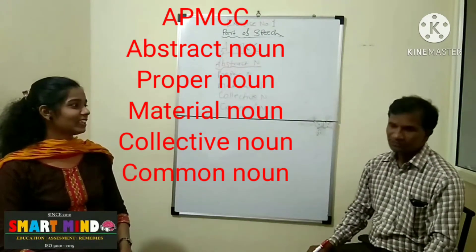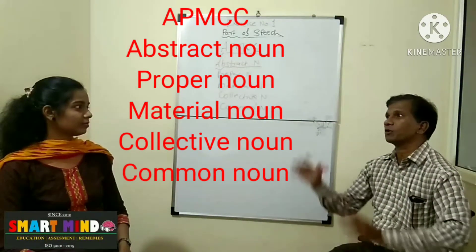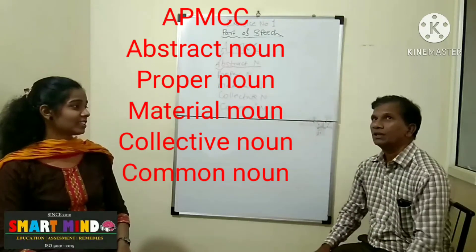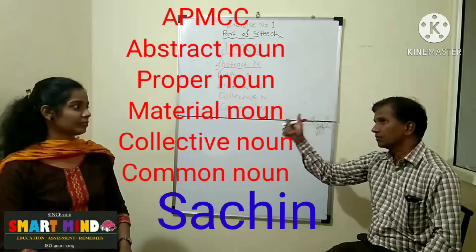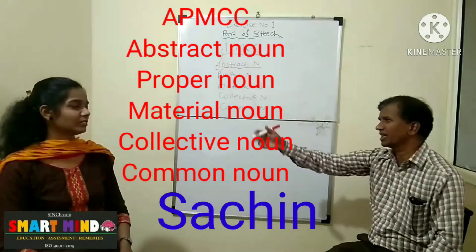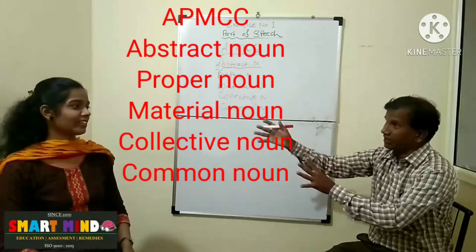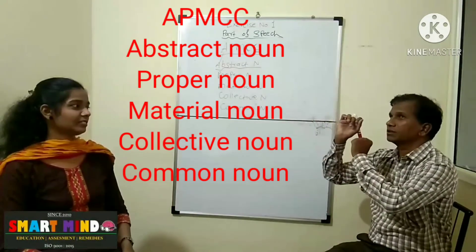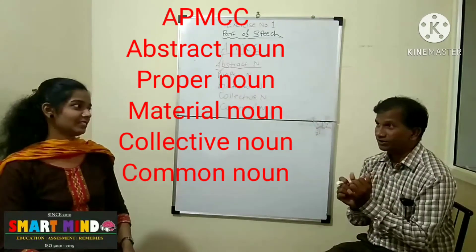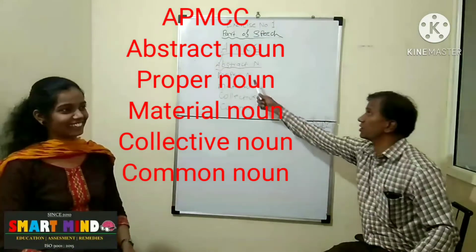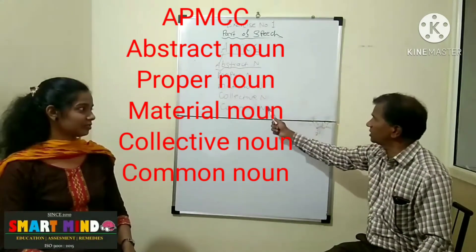Now let's look at the proper noun. Proper noun means the name of a person or place which is specific. For example, Sachin is the name of a person. Boy or girl is a common noun. But if you name that boy Sachin — a specific name — that is a proper noun. For example, tree comes under common noun. But which tree? Mango tree — mango tree is a proper noun. So there is a close relationship between proper noun and common noun.